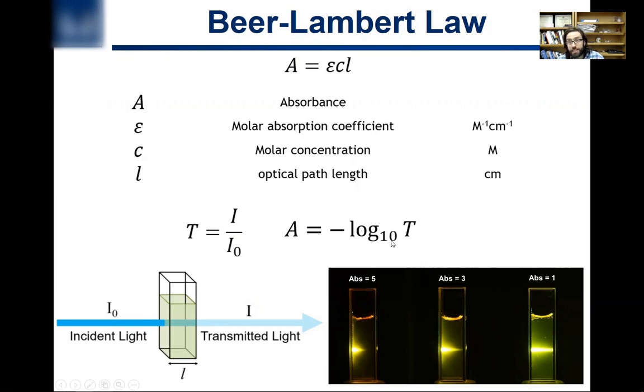It's 10 to the what? So 0.1 is 10 to the minus 1. So log of 0.1, transmission of 10%, 0.1 is negative 1. So negative negative 1 is 1. Absorption of 3 would be what? 0.001. Et cetera.